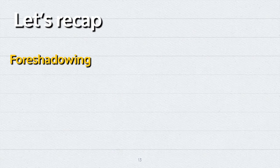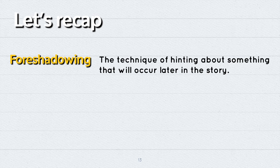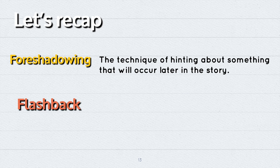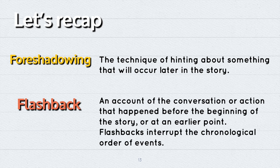So now let's recap. Foreshadowing is the technique of hinting about something that will occur later in the story. Flashback, instead, is an account of a conversation or action that happened before the beginning of the story or at an earlier point. Flashbacks interrupt the chronological order of events.